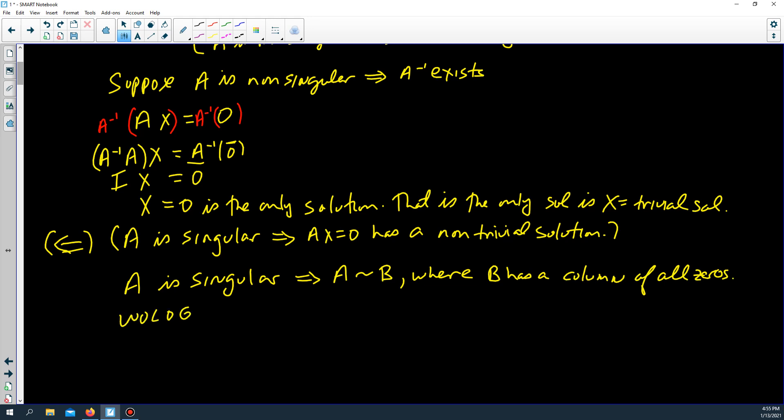Without loss of generality, assume the column of zeros is in the last column, the rightmost column. Note, since A is row equivalent to B, Ax equals 0 and Bx equals 0 have the same solutions.